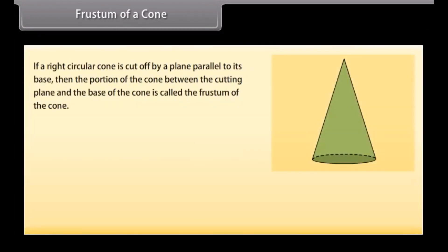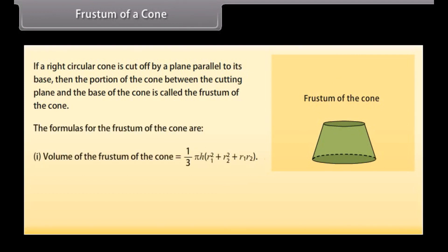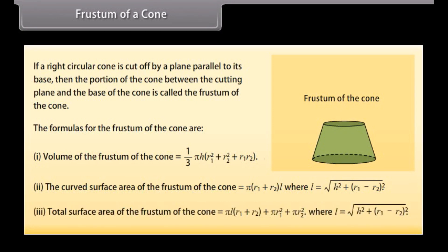Frustum of a cone. If a right circular cone is cut by a plane parallel to its base, the portion of the cone between the cutting plane and the base of the cone is called the frustum of the cone. The formulas for the frustum of the cone are given below, and we will find the volume and surface area of the frustum using these formulas in the next screen.